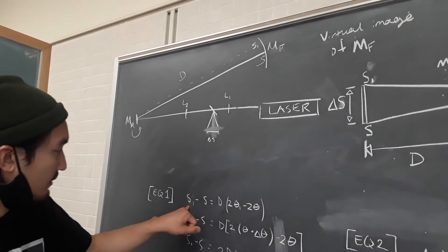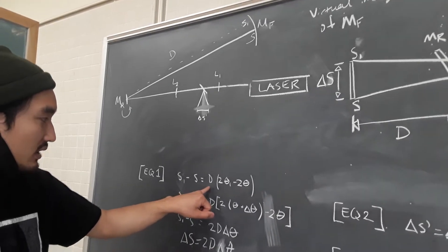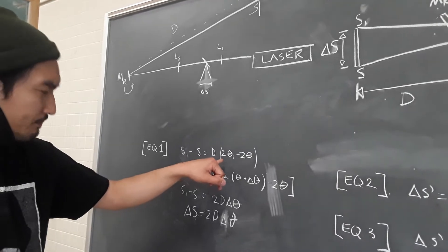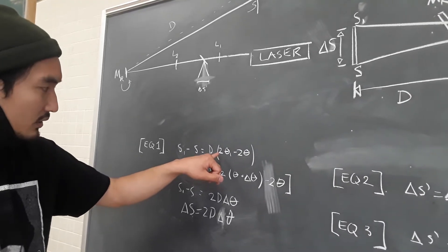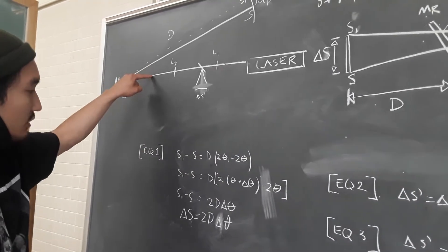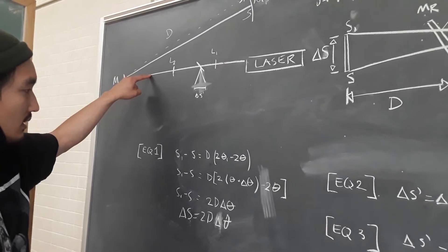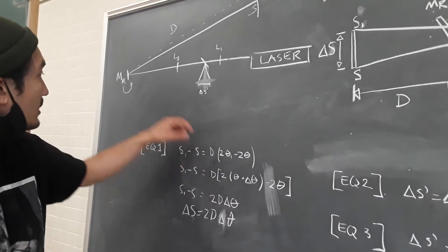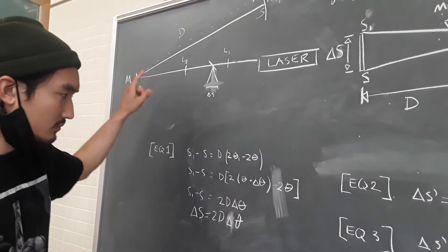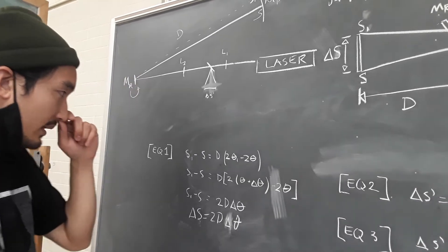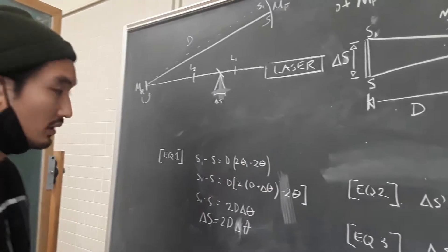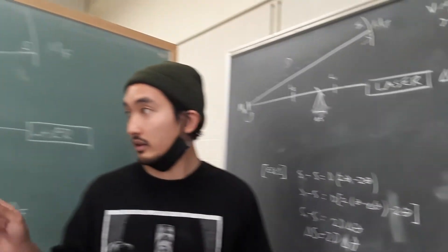And so the difference between those will be equal to the distance times two times that first angle, which is the whole angle of rotation, minus two times theta, which is our initial angle. And just to explain why it's double theta a little more in-depth, I'm going to turn to this board.